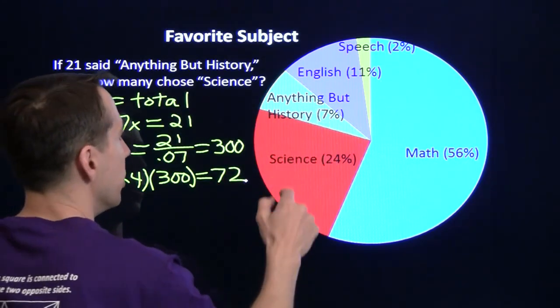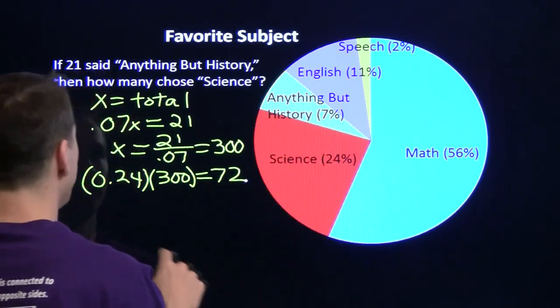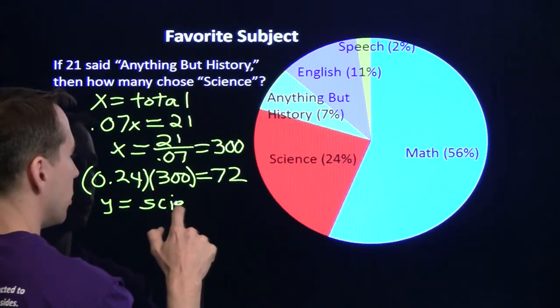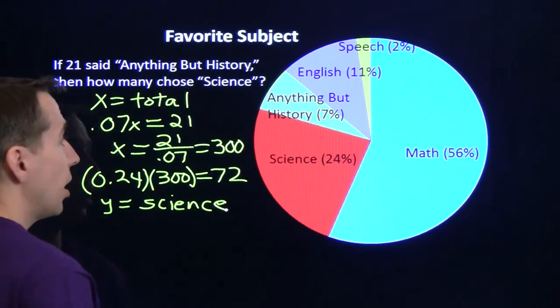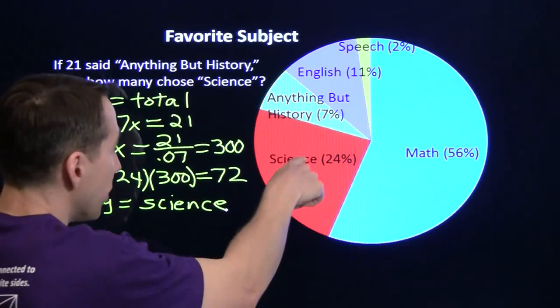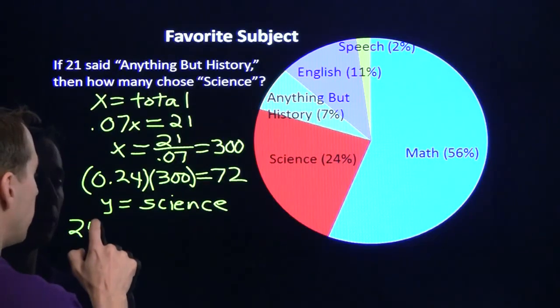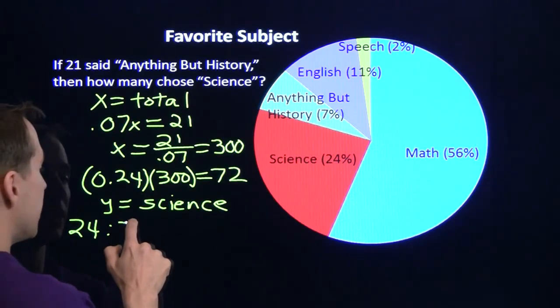And then yet another way we can do this is we can say, y is the number in science. And we can set up a ratio here. We know that the ratio of science to anything but history is 24 to 7.